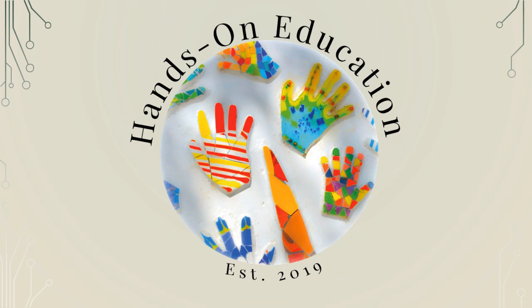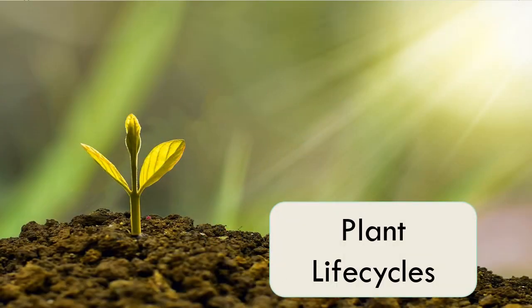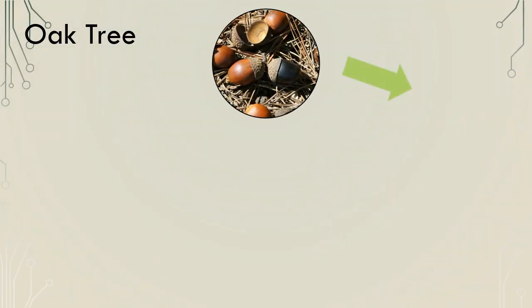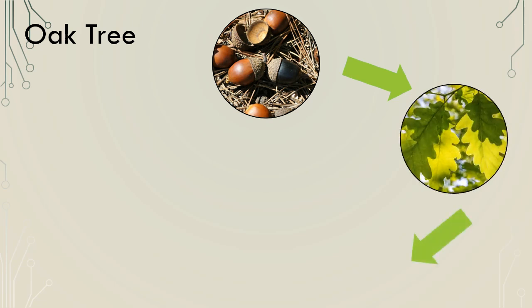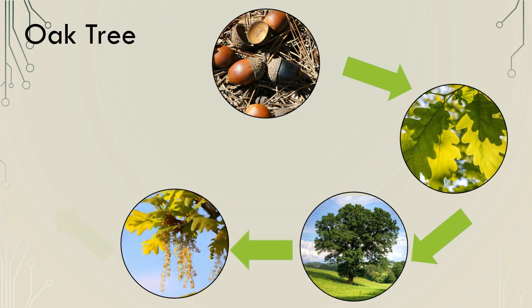Hello and welcome to Hands-On Education. In this video we will look at plant life cycles. A plant life cycle shows us the different stages of life in a plant as they grow from small seeds into adult plants, which then produce their own seeds ready for the life cycle to begin again.